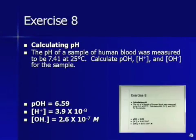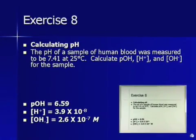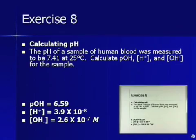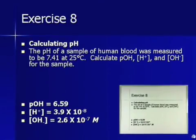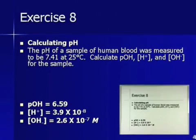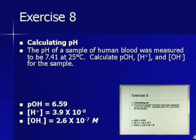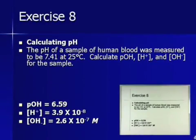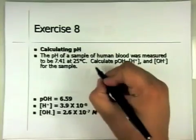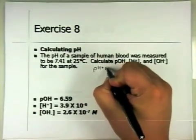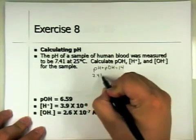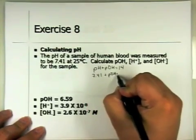Here's a little bit trickier problem, more complex problem, something that you would expect to see on maybe a short answer for the AP exam. The pH of a sample of human blood was measured to be 7.41 at 25 degrees Celsius. Calculate the pOH, H+ concentration, and OH- concentration for this sample. We know the pH. So the easiest thing we can do first is calculate the pOH, because pH plus pOH is equal to 14. So plug in 7.41, and our pOH is equal to 6.59, because 14 minus 7.41 is 6.59.